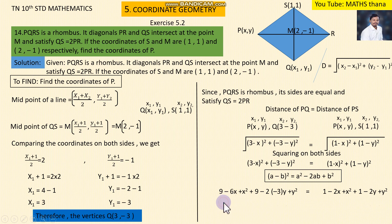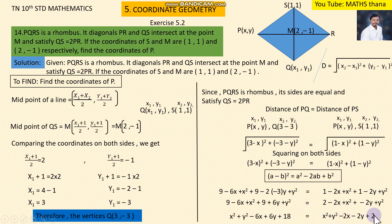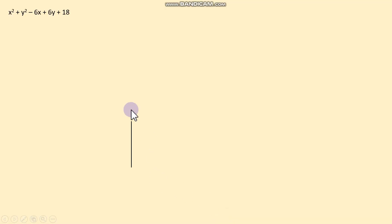We simplify this step. Putting in minus 2 minus 3, multiply and get 6y. The expression becomes x² + y² minus 6y + 9. Adding the steps, x² + y² minus 2y. Now we cancel x² + y² from both sides.